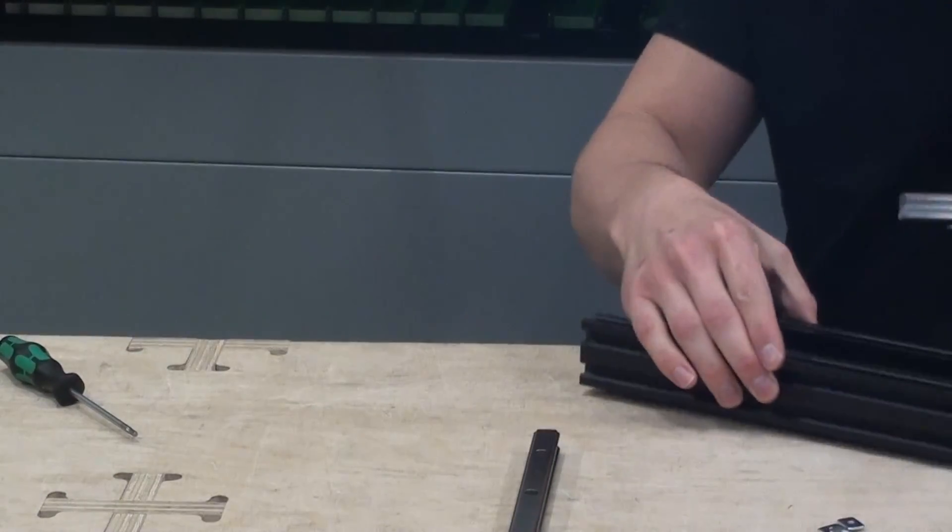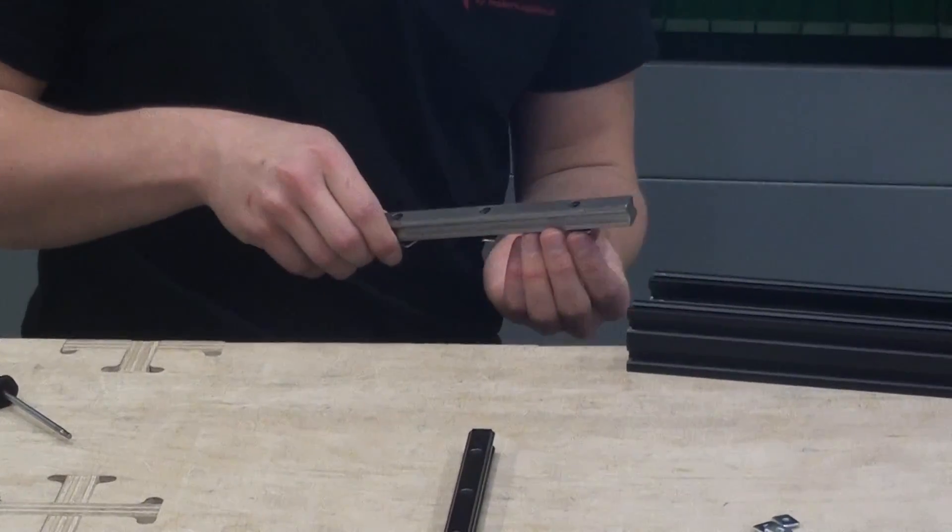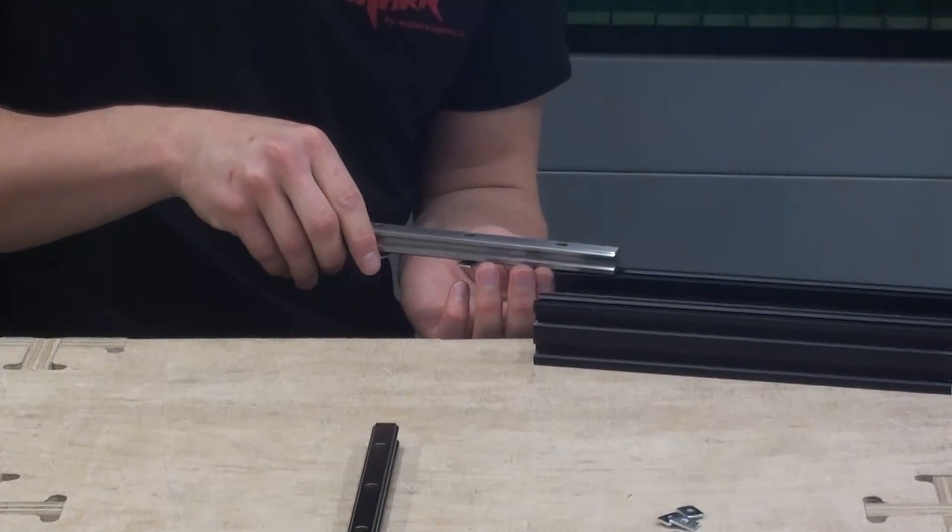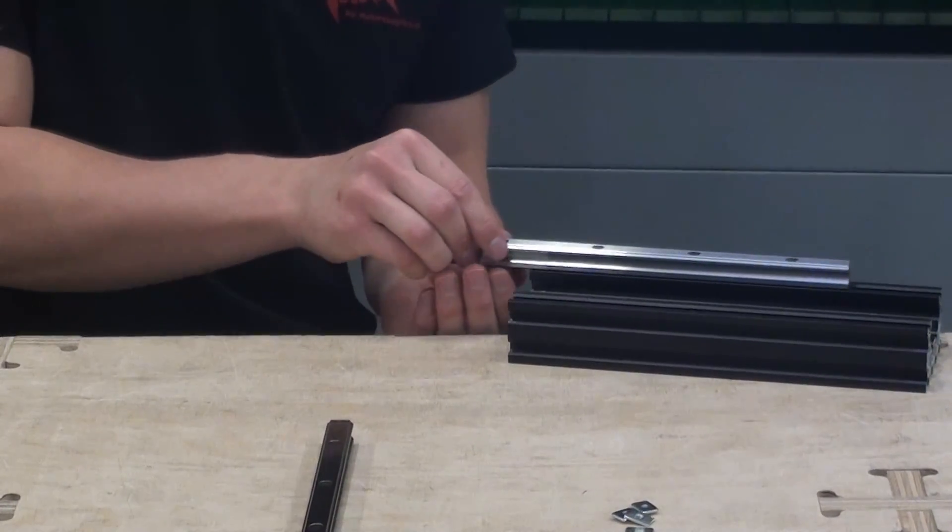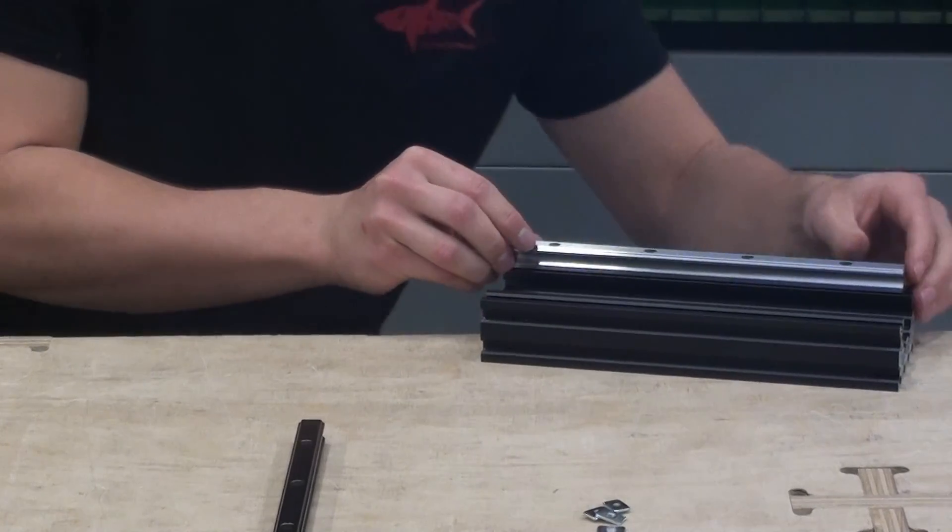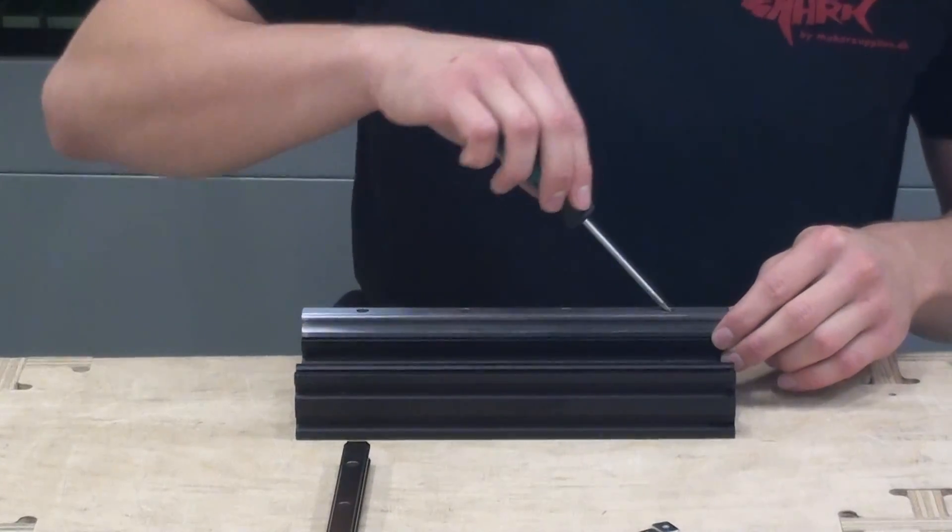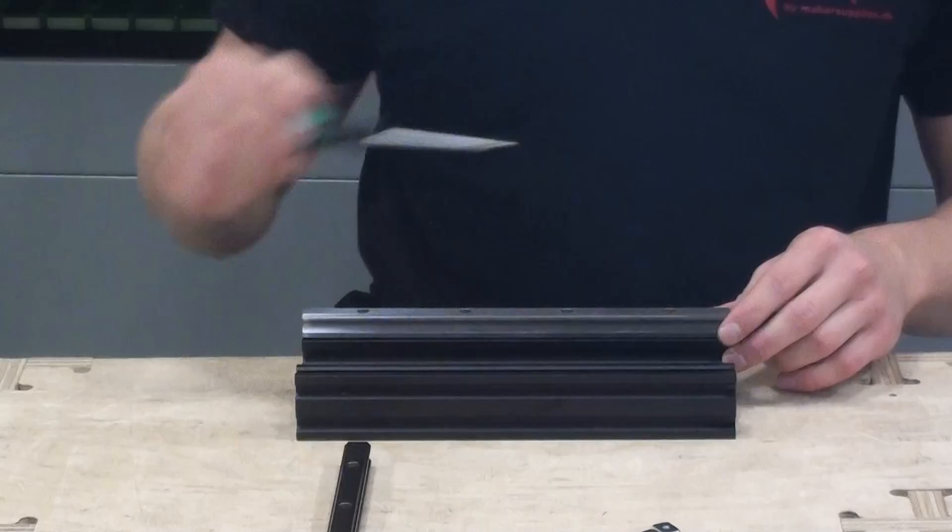Now I am ready to slide the linear guide onto the C-beam. What I am doing here is guiding the T-nut with the lower fingers. Now I will center the linear guide on the C-beam and to make sure it stays there I will just lightly tighten the screw.